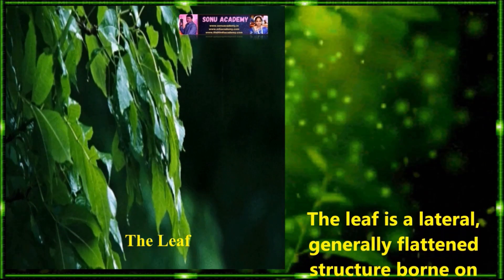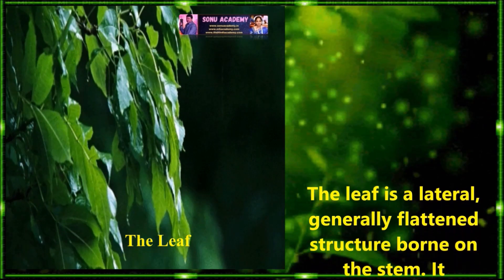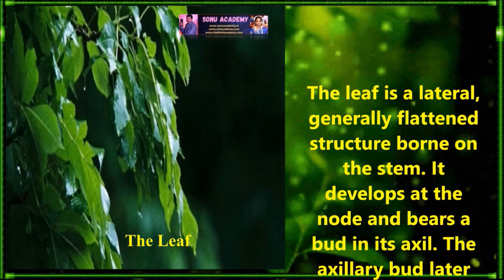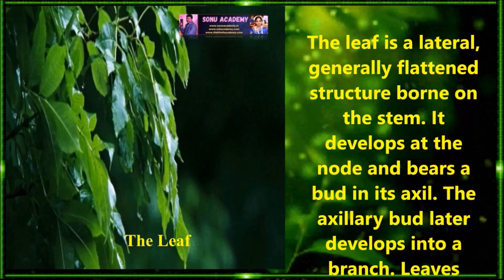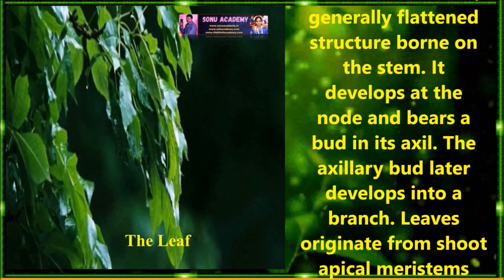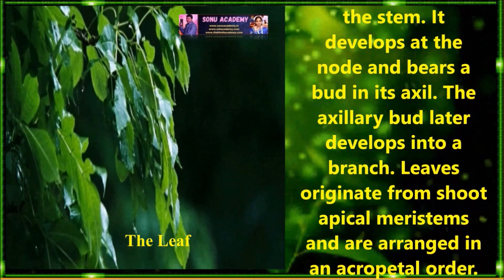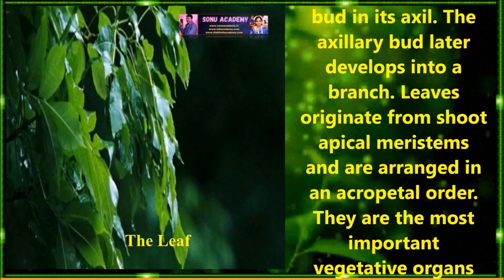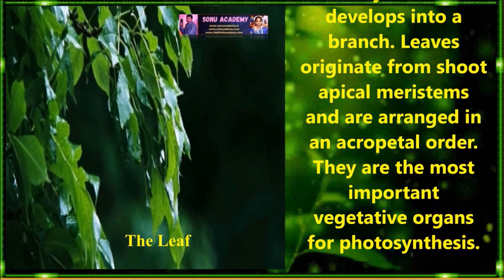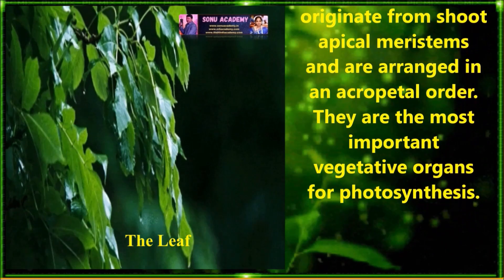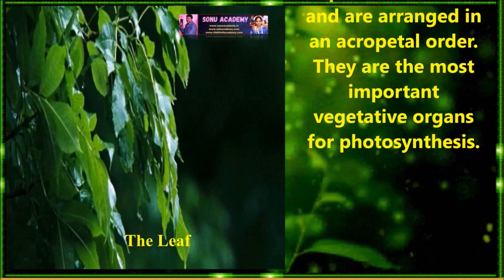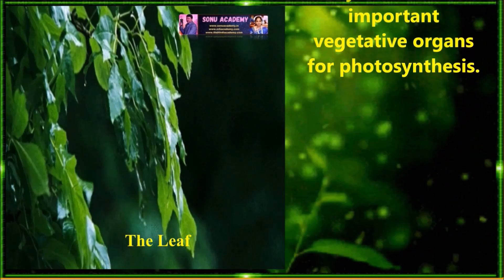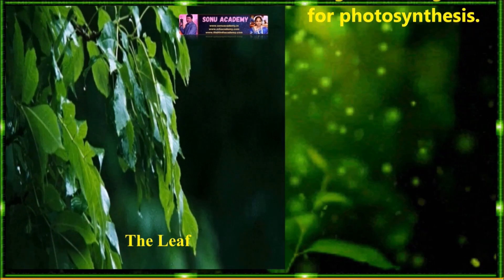Now let us discuss about the leaf. The leaf is a lateral, generally flattened structure grown on the stem. It develops at the node and bears a bud in its axil. The axillary bud later develops into a branch. Leaves originate from the shoot apical meristem and are arranged in an acropetal order. They are the most important vegetative organs for photosynthesis.